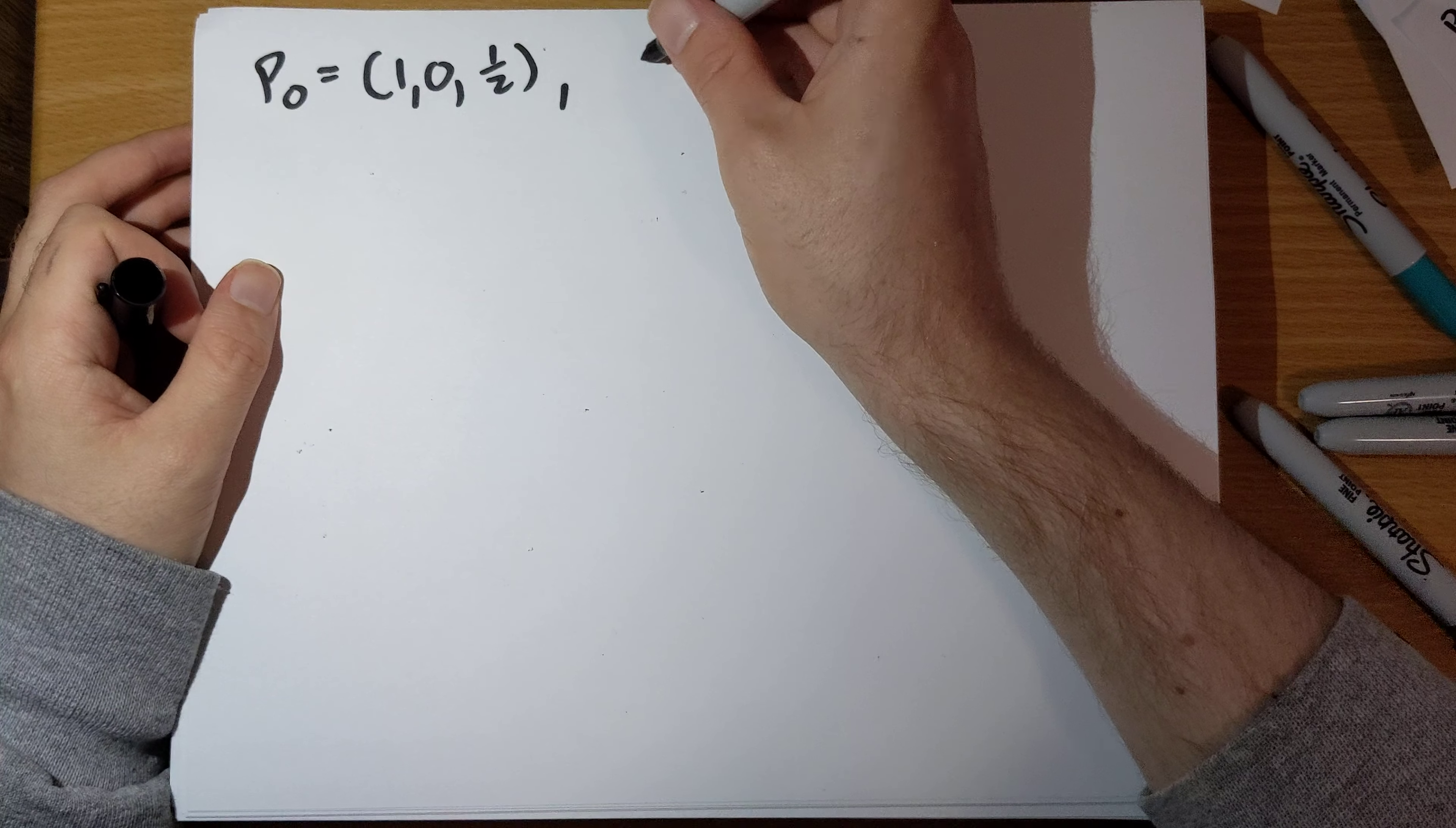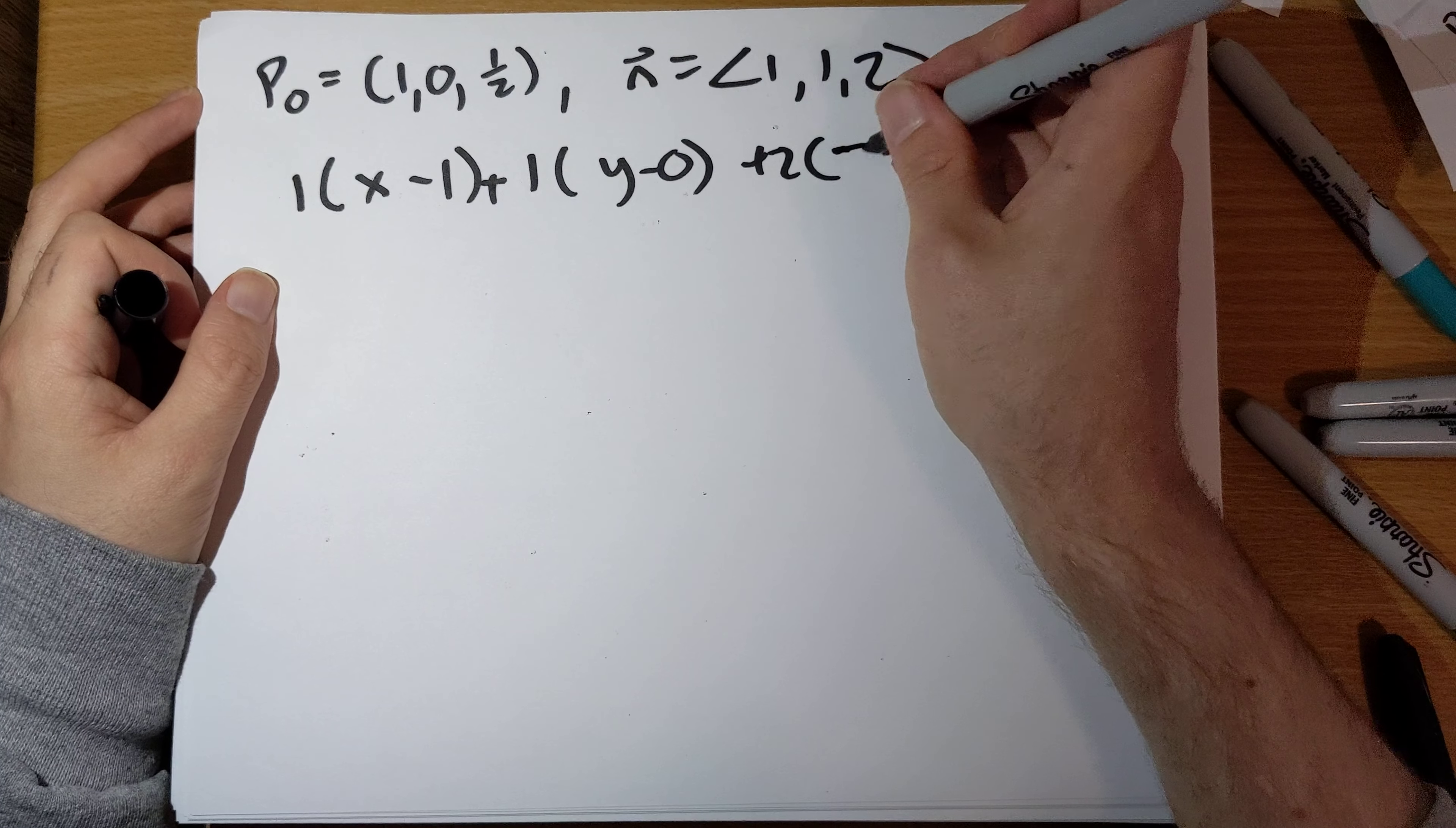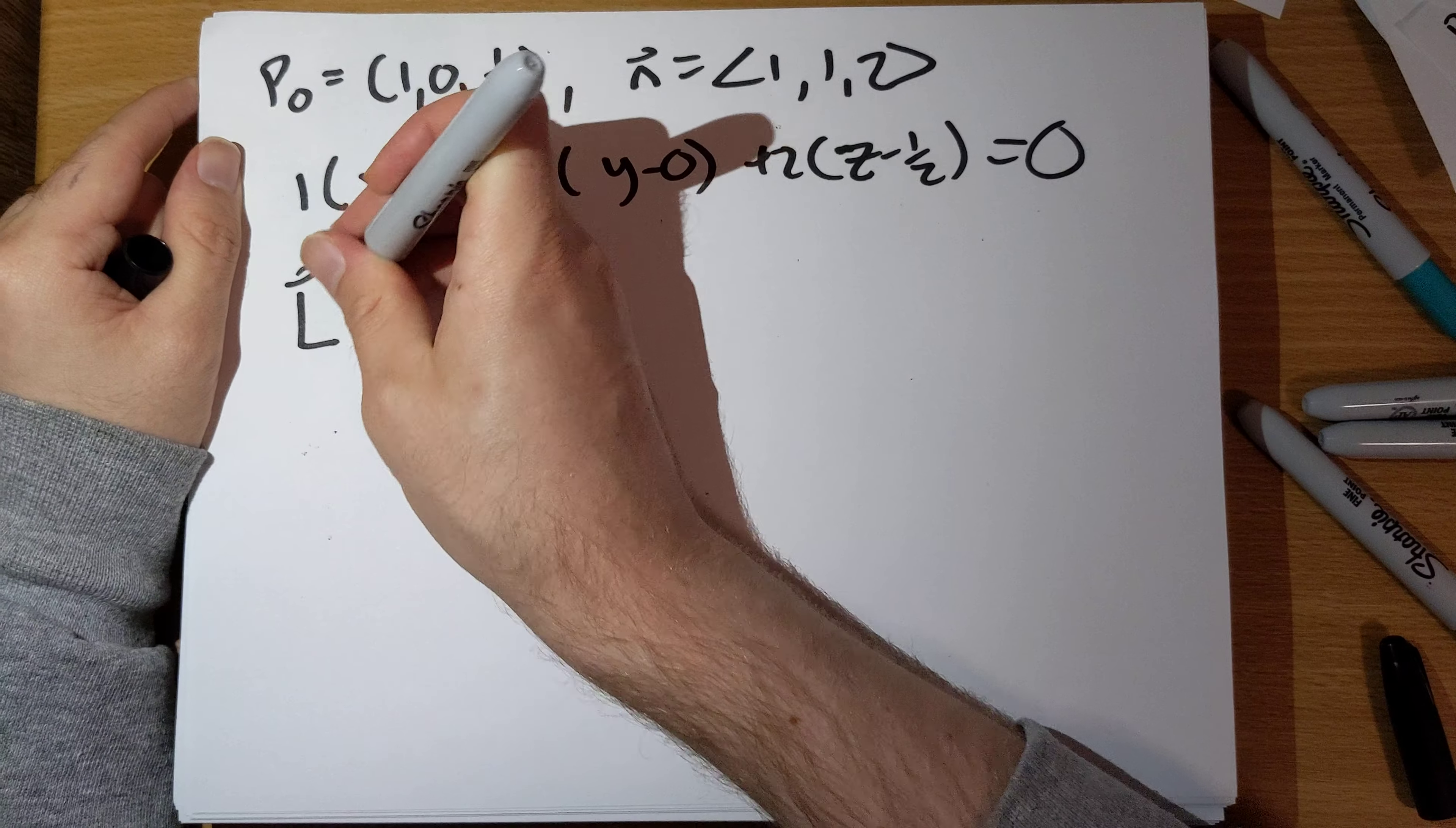Our normal vector that we'll need for the equation of the plane can just be given by the gradient is 1, 1, 2. So equation of the plane is just going to be 1 times x minus 1 plus 1 times y minus 0 plus 2 times 2 times z minus 1 half is equal to 0. So this gives you the equation of the tangent plane for the normal line.